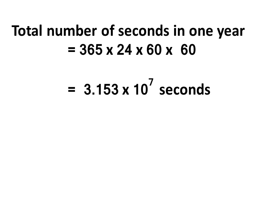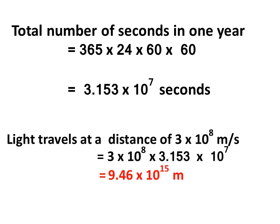If light travels at a distance of 3 × 10^8 meters per second, therefore, the distance traveled by light in one year is equal to 3 × 10^8 × 3.153 × 10^7.